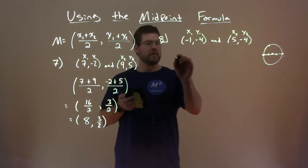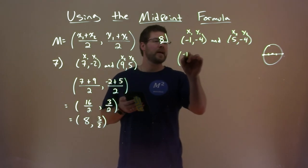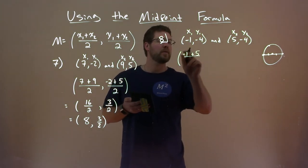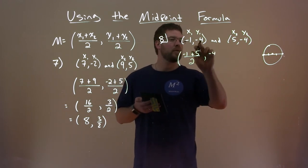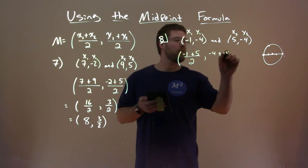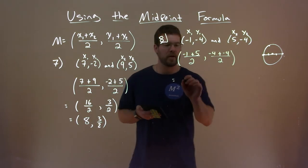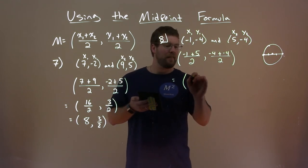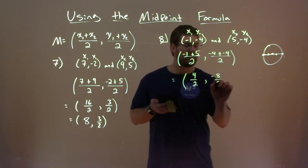Using our formula here for the midpoint, we have x1, negative 1, plus x2, which is 5, over 2, and for the y's, negative 4, y1, plus negative 4, y2, over 2. Let's simplify that. Negative 1 plus 5 is 4, over 2, and negative 4 plus negative 4 is negative 8, over 2.